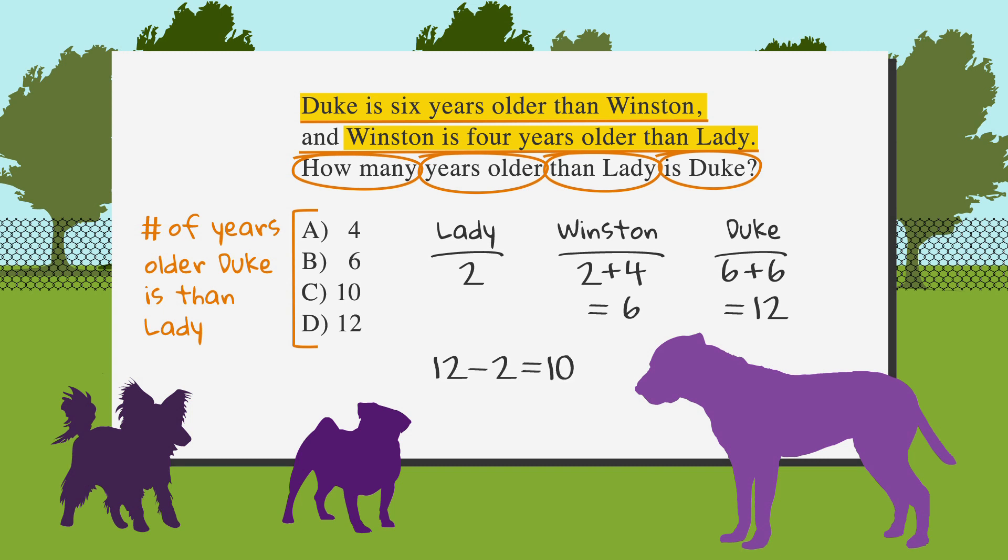Then, take Duke's age, twelve, and subtract the number we picked for Lady, two, to get ten. So, the difference between Duke's age and Lady's age is ten years. Choice C.